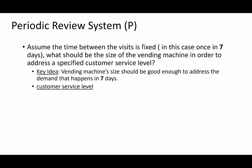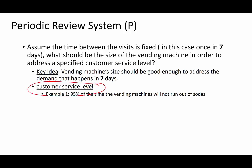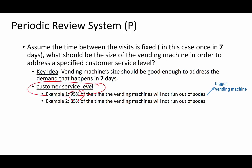Let us focus on customer service level. This customer service level is usually set exogenously. Since the demand is uncertain, it is up to us to decide how much of the demand we are going to address. On one extreme, we can build the world's largest vending machine to capture all of the demand, or we can specify a customer service level where we can live with a little bit of stockouts. For example, 95% means the vending machine will not run out of sodas 95% of the time. Clearly, a higher service level means a much bigger vending machine.